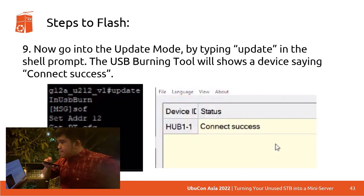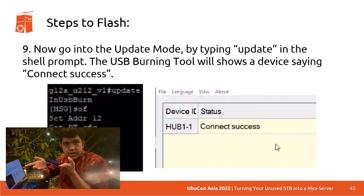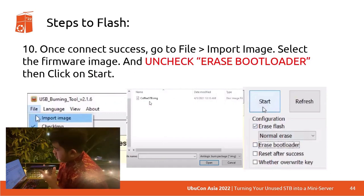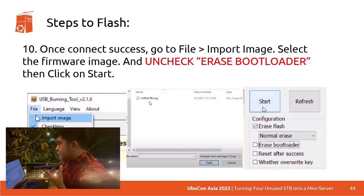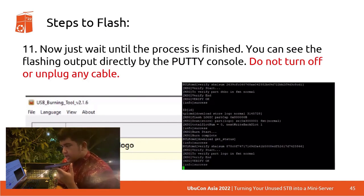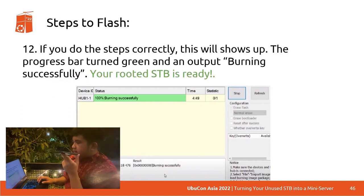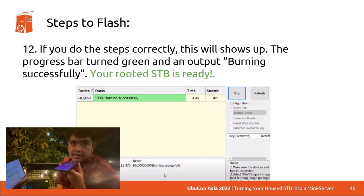Now we need to go into update mode by simply typing 'update' — no need for 'reboot update' because it's not an ADB shell prompt. The USB Burning Tool will then show a device indicating it's connected. Once the connection is successful, go to File > Import Image and select the firmware image you downloaded previously. Important: uncheck 'Erase Bootloader' and then click Start. Wait until the process is finished — you can see the flashing output in the PuTTY console. Most importantly, do not turn off or unplug any cable, as it could corrupt the system. If done correctly, the progress bar turns green and shows 'Burning Successfully.' Your rooted STB is now ready to use.